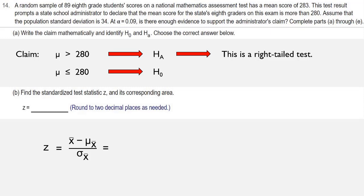Sigma of x-bar is sigma divided by the square root of n. The x-bar is the mean that we find, which is 283. Mu of x-bar is the mean from the claim, which is 280. Sigma of x-bar is going to be 34 divided by the square root of 89.